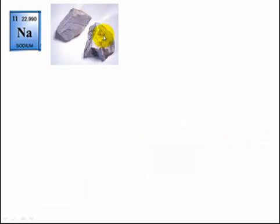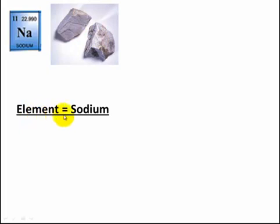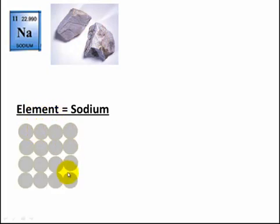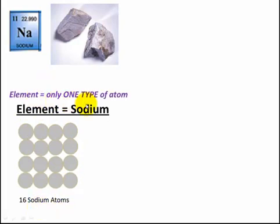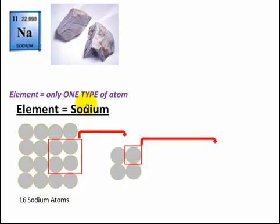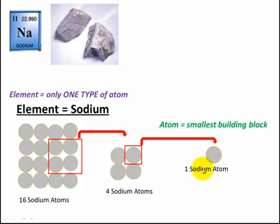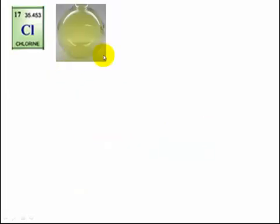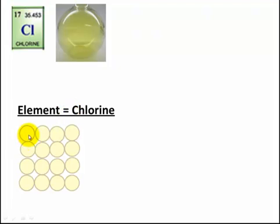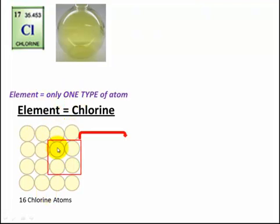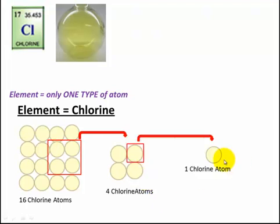Sodium - another metal. Again shiny, lustrous, ductile, solid at room temperature, conducts heat and electricity. The element sodium is made up of only sodium atoms, so it's an element because it's only one type of atom. Here we've got four sodium atoms and here we've got one sodium atom. Chlorine is actually a non-metal and it's a gas at room temperature - a yellowy type of gas. The element chlorine is made up of chlorine atoms; it's an element because there's only one type of atom.